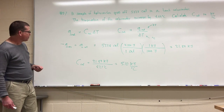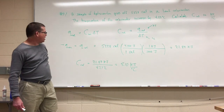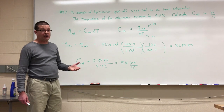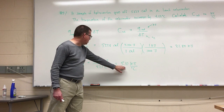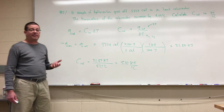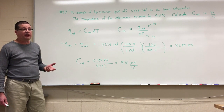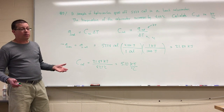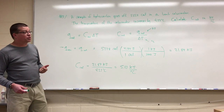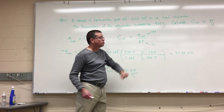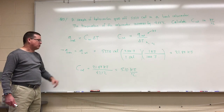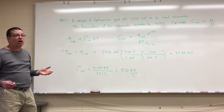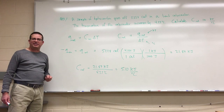Plugging into the equation: C_cal = 21.87 kJ ÷ 4.29°C = 5.10 kJ/°C. That is the heat capacity for this particular calorimeter setup — it depends on the calorimeter itself, how much water is in it, and so on. Once we have this value, we can use it for the exact same calorimeter assembly with the same amount of water to determine the unknown heat of reaction for an unknown hydrocarbon. That's where we'll pick it up next time, folks.